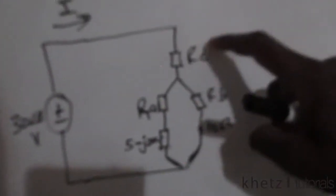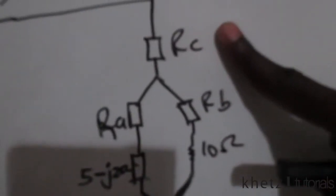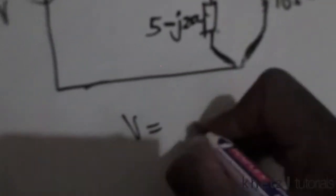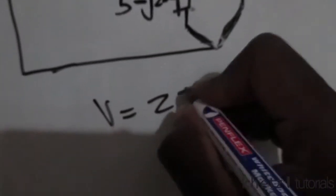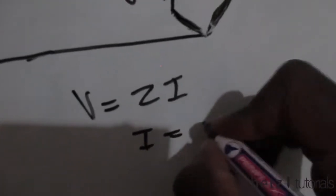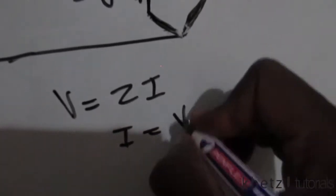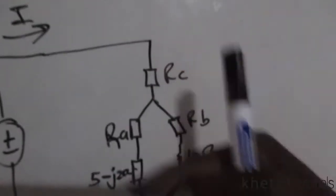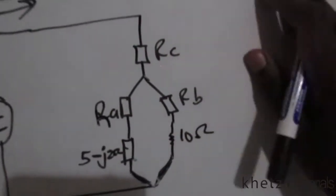The reason I transformed this into a Y is so that I can have a value for the total impedance, and therefore use the formula: voltage equals impedance multiplied by I. Since we're interested in finding I, we say I = V / Z, where V is the supplied voltage and Z is the total impedance. So the first step is to find the total impedance of this network.